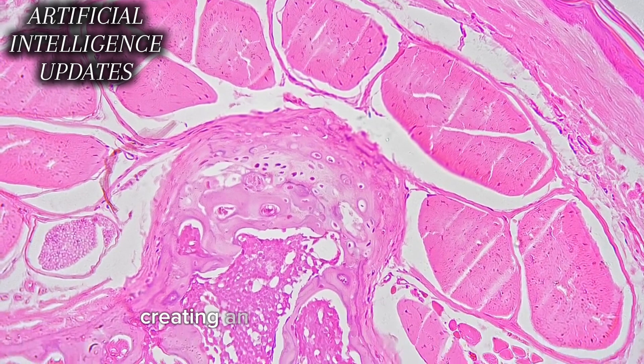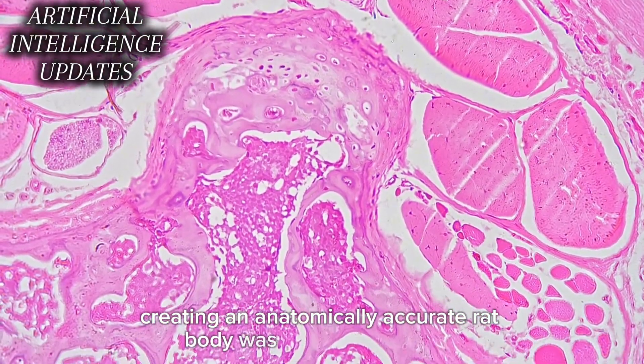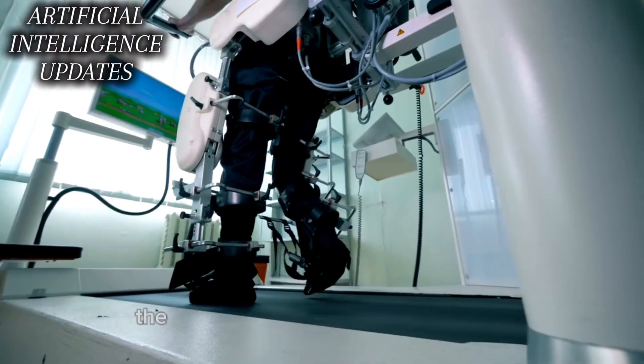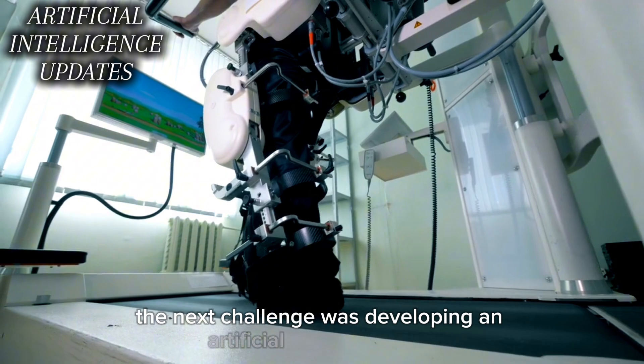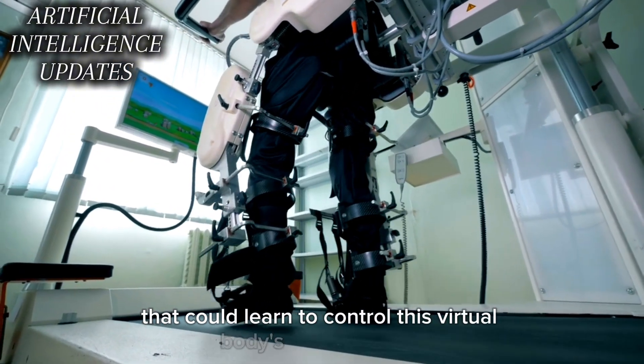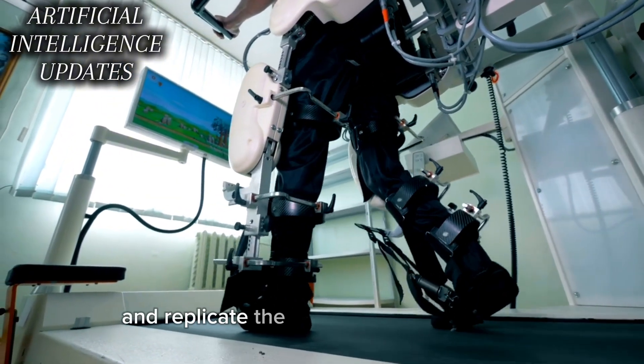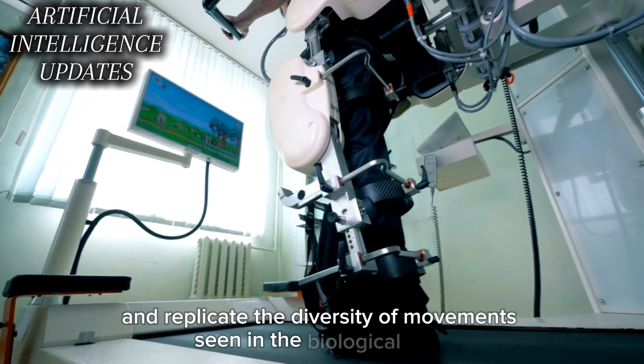However, creating an anatomically accurate rat body was just the initial step. The next challenge was developing an artificial neural network that could learn to control this virtual body's biomechanics and replicate the diversity of movements seen in the biological data.